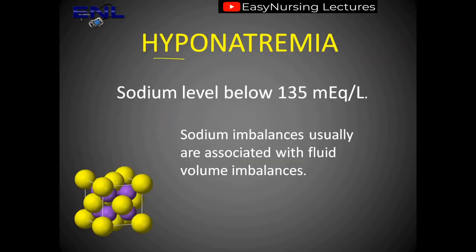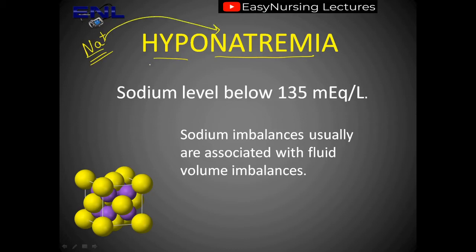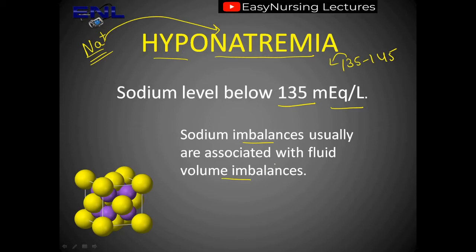Now let's talk about hyponatremia. We call sodium 'Na positive' because Na means natremia. Hypo means its level falls below 135 milliequivalents per litre — the normal is 135 to 145. When it falls below 135, it will be hyponatremia. Sodium imbalances are usually associated with fluid volume imbalances — either excess of fluid or deficiency of fluid causes that imbalance.